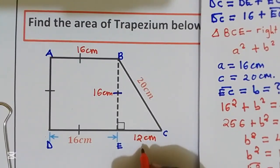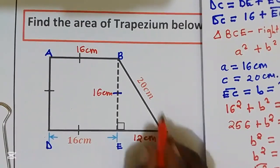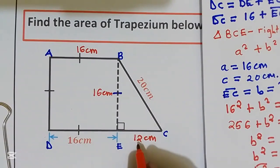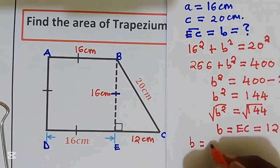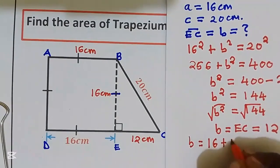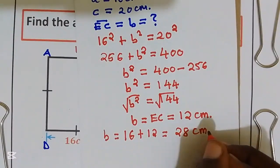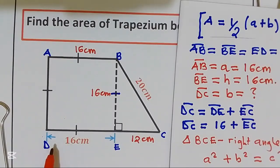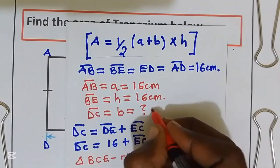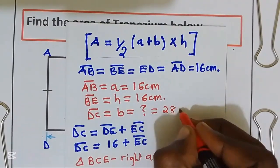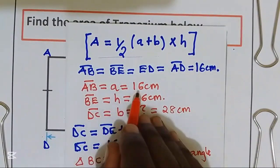Now the value of DC, which is side B in the trapezium formula, is equal to the sum of BE plus EC: 16 plus 12, which gives us 28 centimeters. So distance DC equals 28 centimeters.